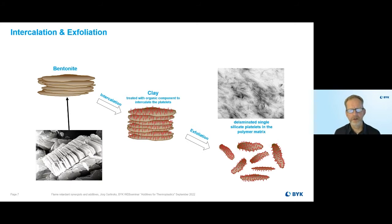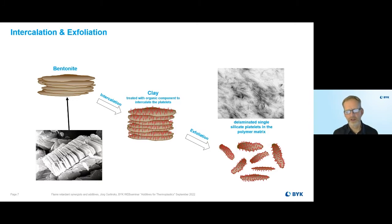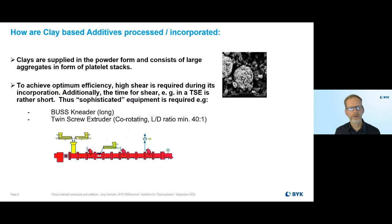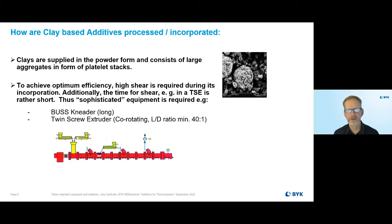When we dig the clay out of the earth, we clean it, mill it, bring it into the right form, and then chemically modify it by exchanging the salt structure with organics — so-called intercalation — to widen up the stacks of these primary agglomerates, making it easier to disperse them in the final application, which is called exfoliation. The typical process is done on most standard dispersing and compounding equipment. We suggest especially for HFFR cable applications a relatively high shearing screw setup to allow good exfoliation and dispersion of the clay. A typical device is a Buss kneader or a twin screw with L/D more than 40.